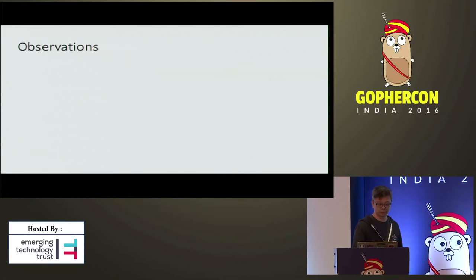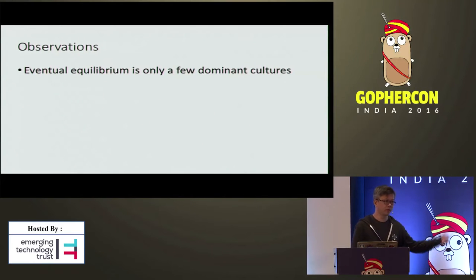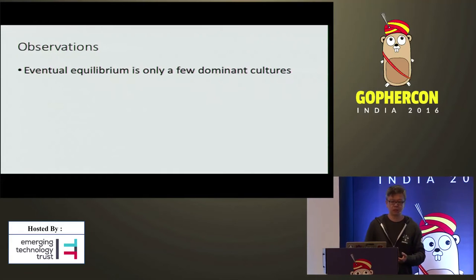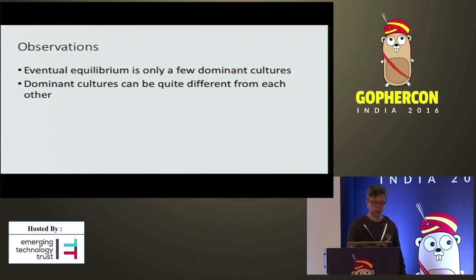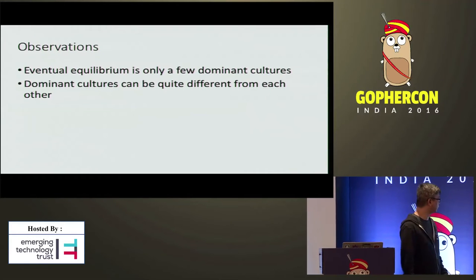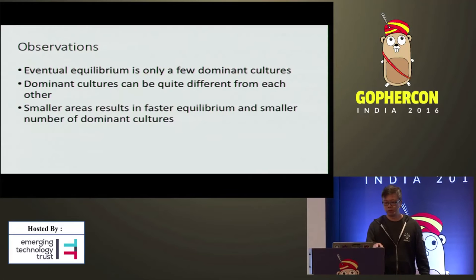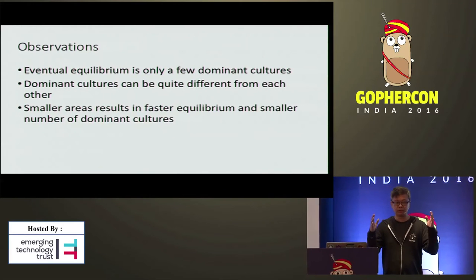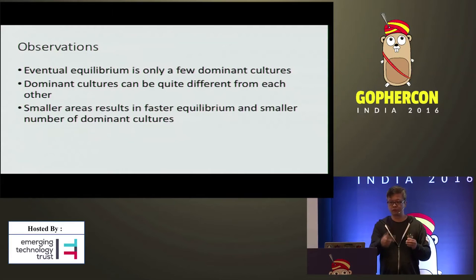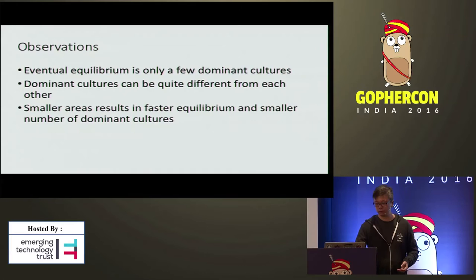The observations from this simulation: eventually, if you play out the rest of the simulation, equilibrium will be achieved. But equilibrium means there will only be a few dominant cultures, and the dominant cultures will be very different from each other. If I reduce the area, equilibrium is achieved faster but the number of dominant cultures is also smaller. Also, a culture that is more dominant at one point in time doesn't mean it will be dominant at the end — initially a culture may be very dominant and eventually it totally goes away and another culture comes in.